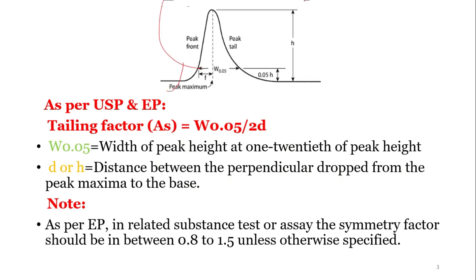In a typical peak, the peak width and peak height are identified. The tailing factor formula is: T = W(0.05) divided by 2d, where W(0.05) is the width of the peak at 1/20th of the peak height (i.e., 5%), and d is the distance between the perpendicular dropped from the peak maxima to the leading edge of the peak.